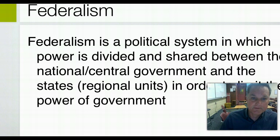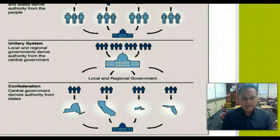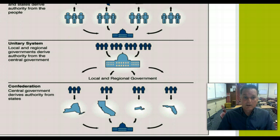All political systems may be evaluated according to their geographic distribution of power. A unitary system is one that concentrates all policy-making powers in one central geographic place. A good example would be Great Britain — until recently, most decisions were made in London, even decisions that could have been decided at the local level were instead decided by the ministries in London. A confederal or confederate system spreads the power among many subunits such as states and has a weak central government.